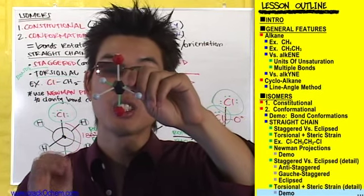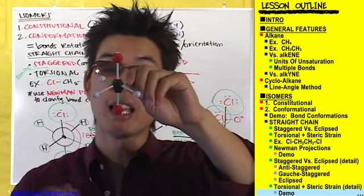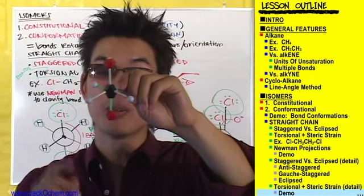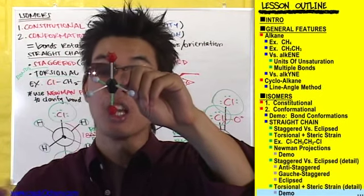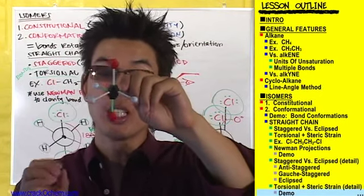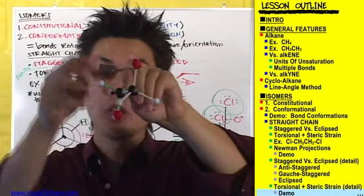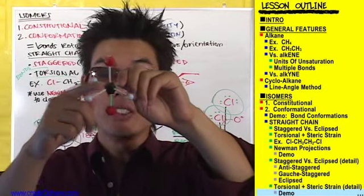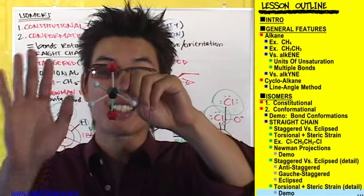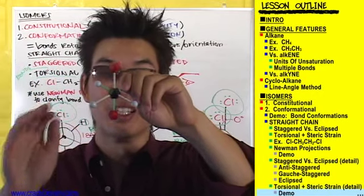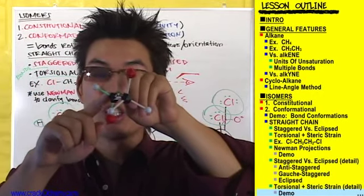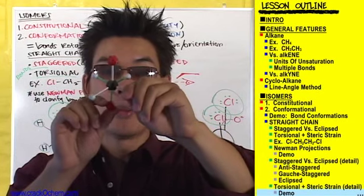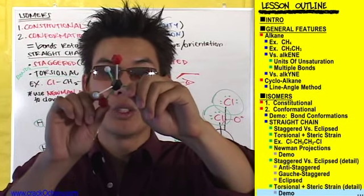Let's see how this turns into the gauche staggered conformation. All you do to get from the anti-conformation to the gauche is rotate the back carbon 120 degrees. Leave this front carbon alone — don't touch the front carbon, just rotate the back carbon 120 degrees.